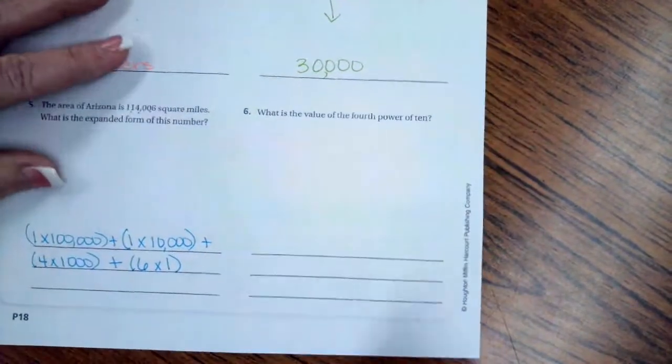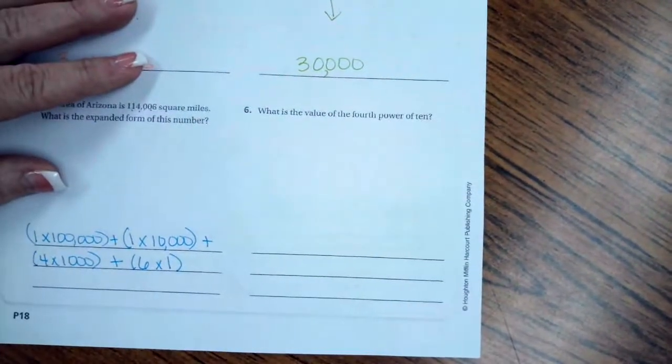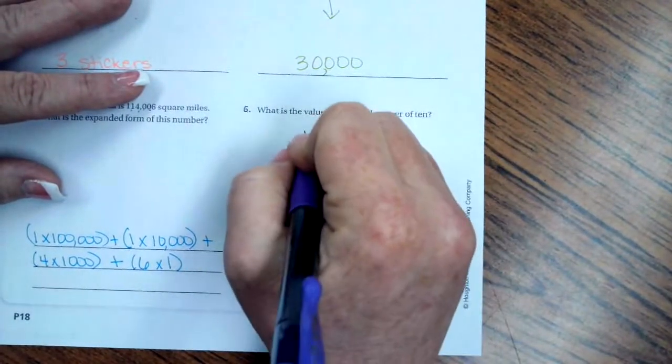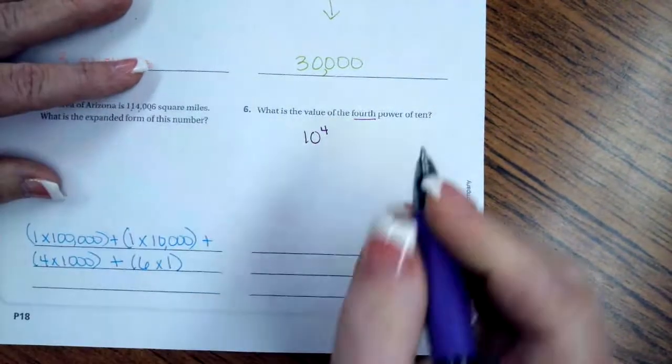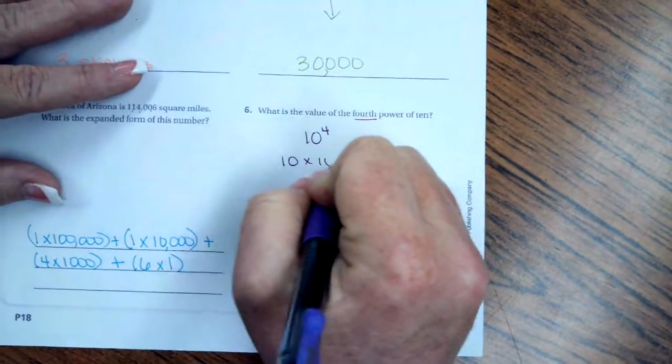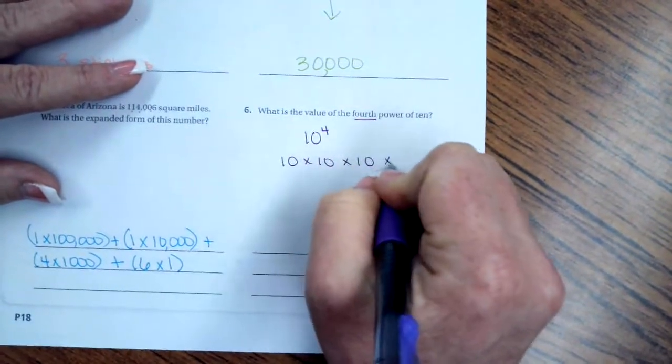All right. What is the value of the 4th power of 10? So that is 10 to the 4th. So, that means 10 times 10 times 10 times 10.